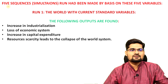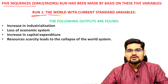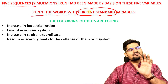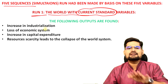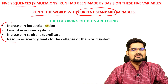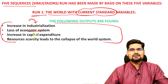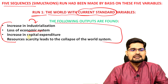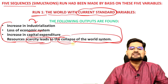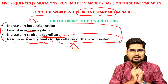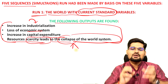Now the five runs or simulations. The first run took the world with current standard variables as they existed in 1972. The results: increase in industrialization is inevitable; loss of economic system will happen if we continue doing the same; an increase in capital expenditure will happen; and resource scarcity will lead to the collapse of the world system eventually.